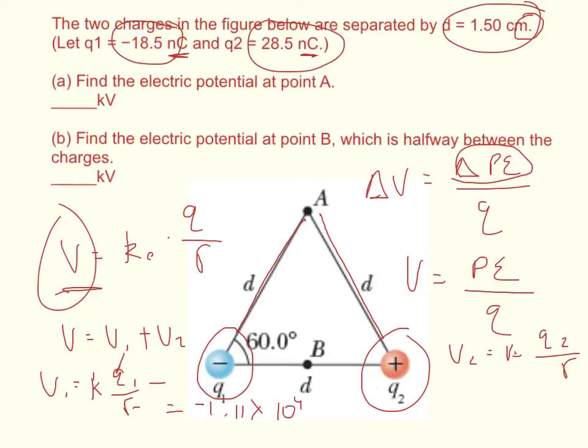You should get that it equals negative 1.11 times 10 to the 4th. You plug your numbers in again for V2, and you should get that V2 is equal to 17,075.3, and that's in units of volts. So when we add those two numbers together, you should get that the electric potential is equal to 5,991.333 volts.